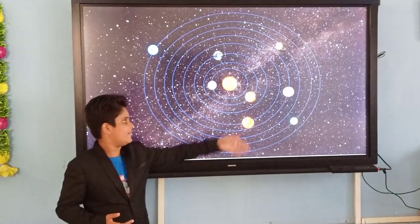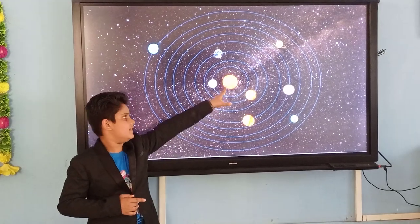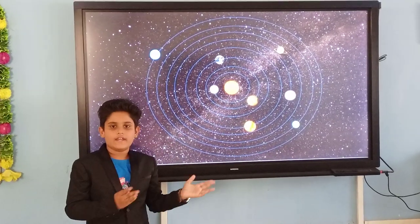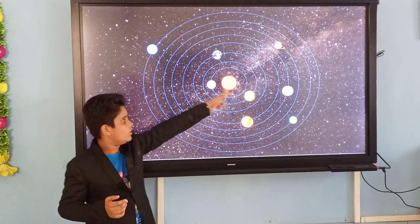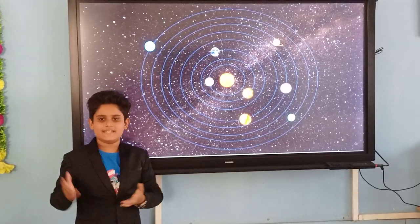Solar system contains 8 planets and 1 sun. Sun is the center of the solar system and it is very hot. 99.9% of the solar system.